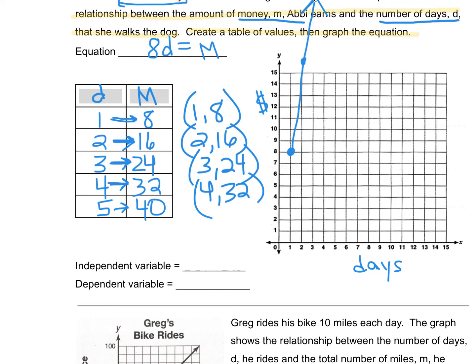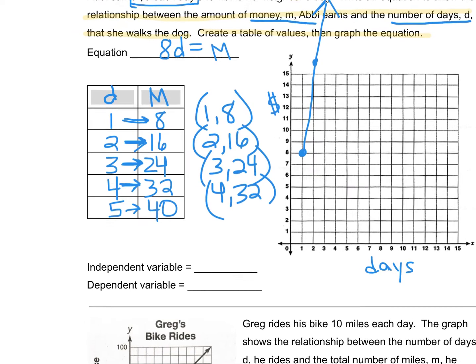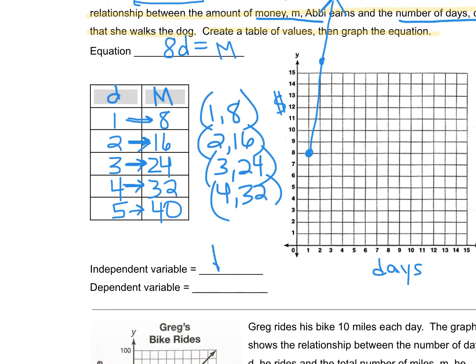So which of these is our independent variable? Would it be the days or the money that she earns? Well, our independent variable is going to be the number of days. Typically, whatever is on your x-axis is the independent variable. The dependent variable is the money that she makes. The amount of money depends on how many days she walks the dog. So as long as we know how many days she's walking, we can figure out the amount of money she's going to make. And your dependent variable is typically on the y-axis.